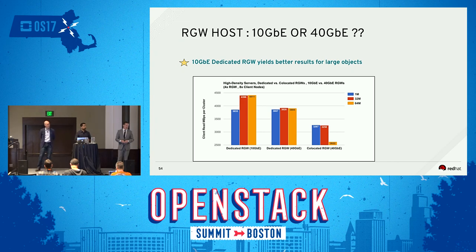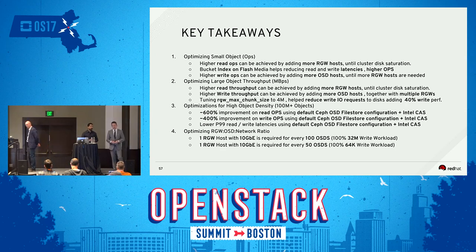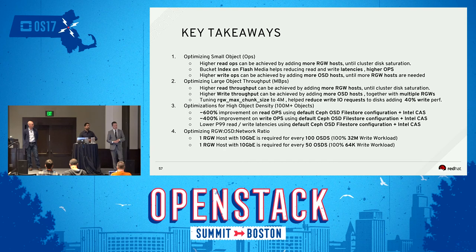Question: what did you use as a front end before RADOS gateways? HAProxy. On each of our RGW hosts, we ran an instance of HAProxy that had one backend that was local. We used it as a connection shield. The reason we didn't use a single load balancer layer was to avoid having a load balancer saturate. So we had a single HAProxy in front of each RGW.